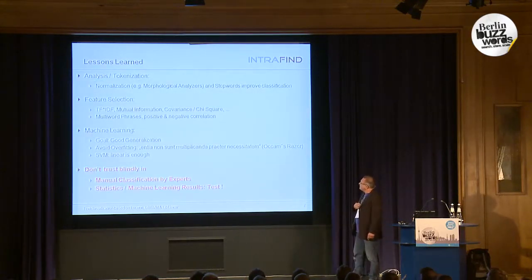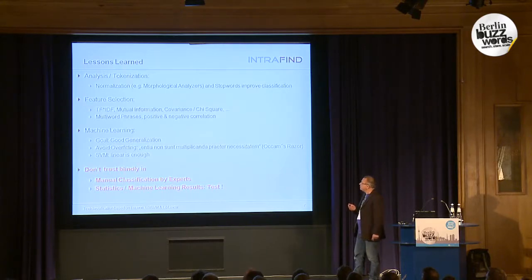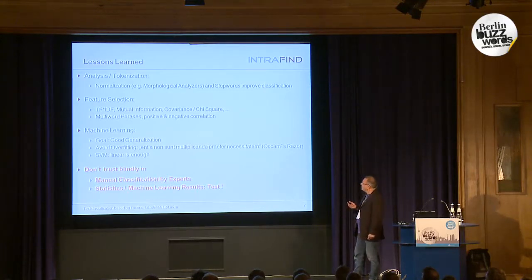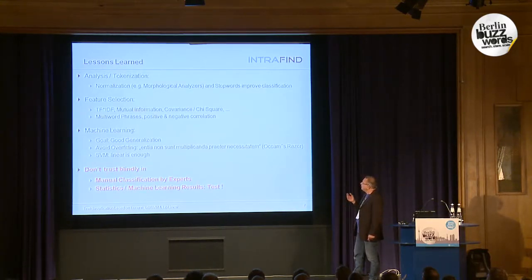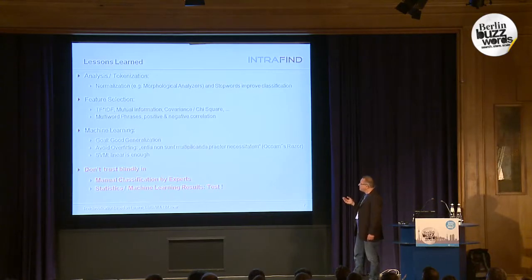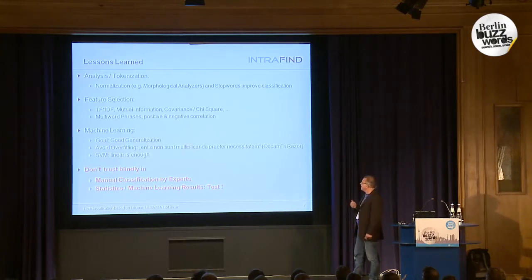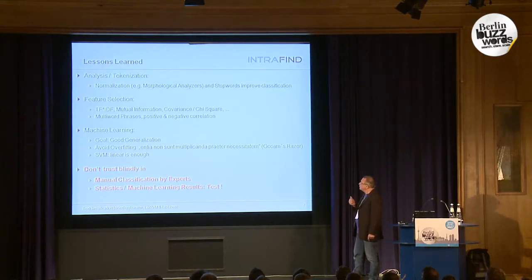Here are the lessons we have learned during the last eight to ten years of doing text classification for our customers. Analysis or tokenization can matter — it depends on the kind of classification you want to do. Usually normalization like stemming or morphological analysis helps, and stop word removal helps. But for special applications, stop words may contain information and may be important. For most content-based classification, they are usually not. Feature selection is important to do, but which kind of measure or method you use is not so important.